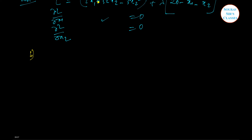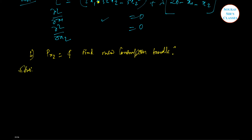In question B, suppose the price of x2 increases to 4, with all else remaining the same. We need to find the new consumption bundle that the agent chooses.